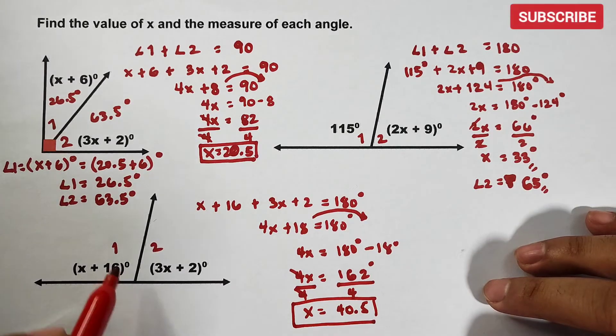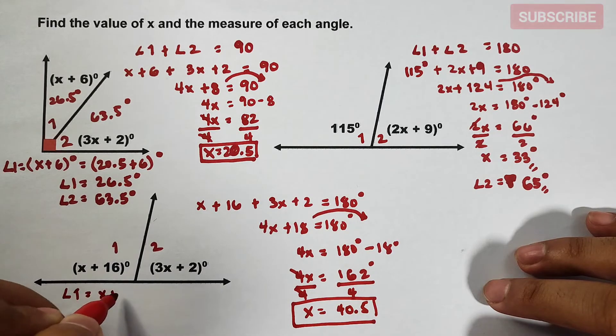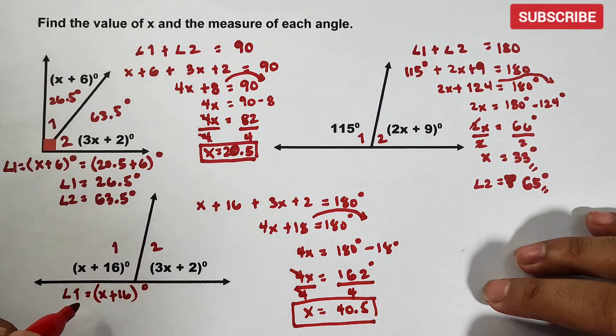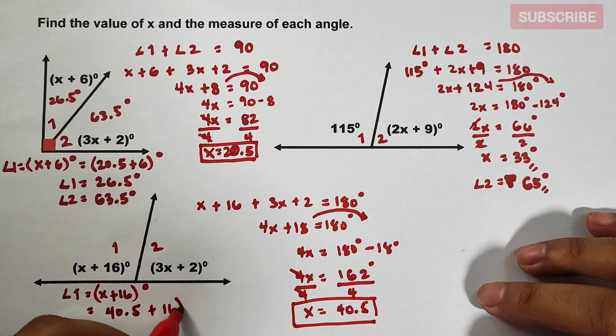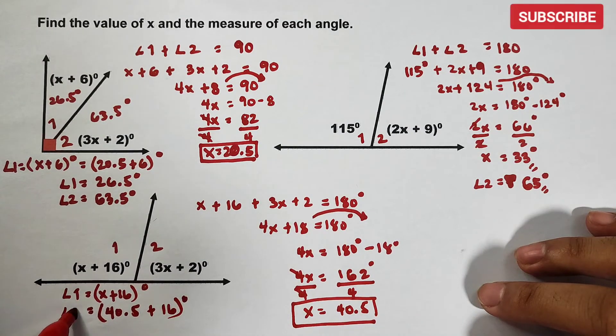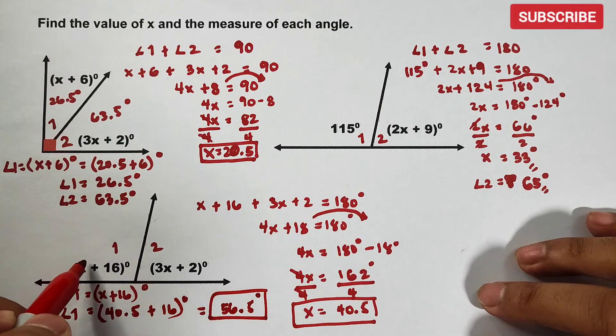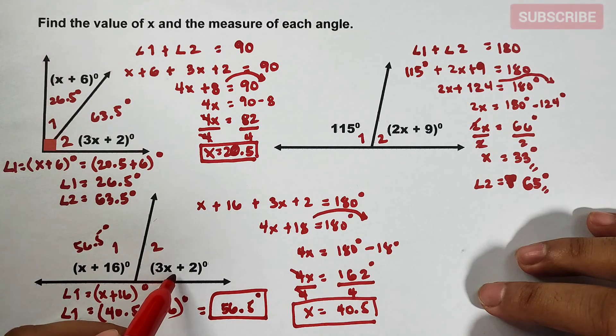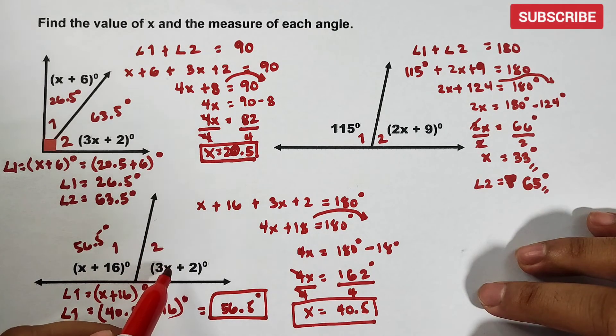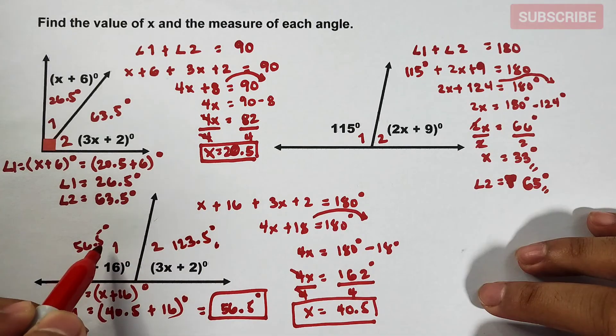What about the measurement of angle 1? Your angle 1 is equal to x plus 16 degrees. Substitute the value of x. 40.5 plus 16 degrees. Meaning your angle 1 is equal to 56.5 degrees. If this is 56.5 degrees, what is the value of this? This one is 123.5 degrees, yung angle 2.